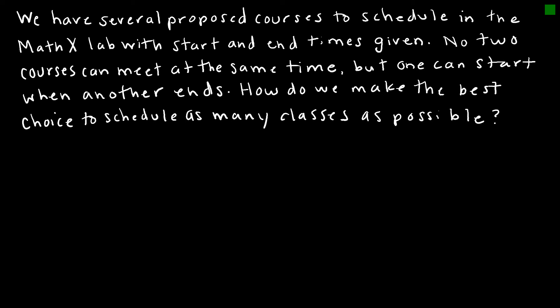So here we have several proposed courses to schedule in the MathX lab with start and end times given. And no two courses can meet at the same time, but one can start when another ends. So how do we make the best possible choice to schedule as many classes as possible? There's different ideas behind this. One is to pick the one that starts at the first time, or perhaps pick the shortest one. But what turns out to work best is to choose the one with the earliest end time.